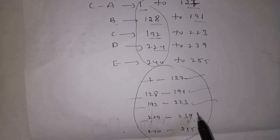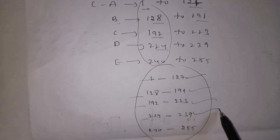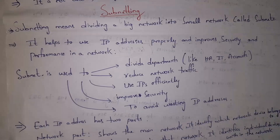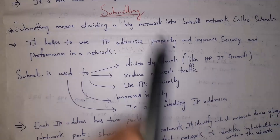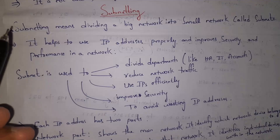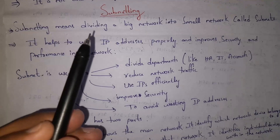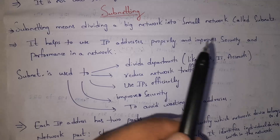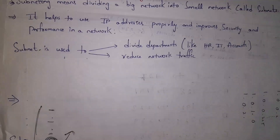So Class A is for big networks, Class B for medium networks, Class C for small networks, Class D for group communications that is multicasting, and Class E for future use. Now let's explain what is subnetting. The name itself says subnet — that is, subnetwork. Subnetting means dividing a big network into smaller networks called subnets.